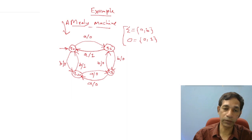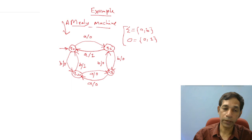At state q0: for input a, go to q1; for input b, go to q4. At q1: for input a, go to q0 with output 1; for input b, go to q3 with output 0. At q3: for input b, go to q1 with output 0; for input a, go to q4 with output 0. At q4: for input b, go to q0 with output 1; for input a, go to q3 with output 0.